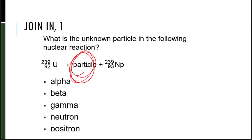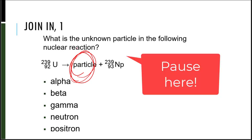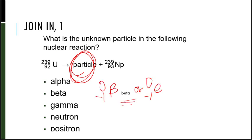I've got a bunch of practice for you. Pause the video here to find out what this unknown particle of this nuclear reaction is. It must be a beta particle because if I have 92 on the left, I need 92 on the right. And right now I've got 93, so I need a negative 1. And my mass is the same, so the mass needs to be zero — that's got to either be an electron or beta, same thing.